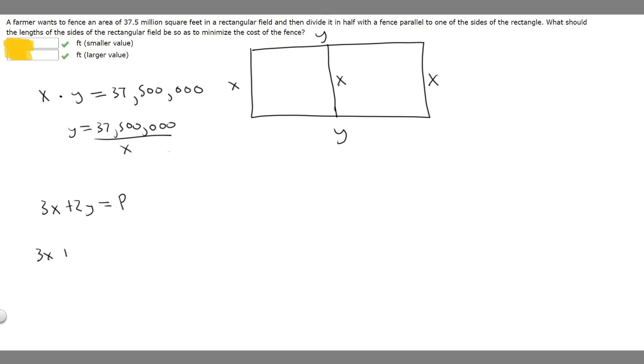If we plug in this, we'll have 3x plus 2 times 37,500,000 over x. And then that's going to be equal to our perimeter. So let's just go ahead and solve. So 3x and then 2 times 37,500,000 is 75,000,000.